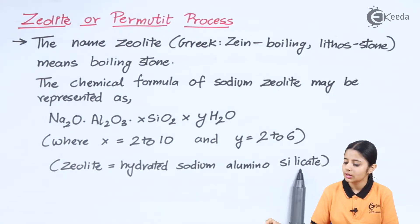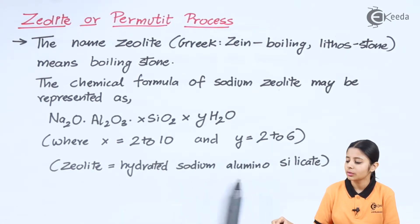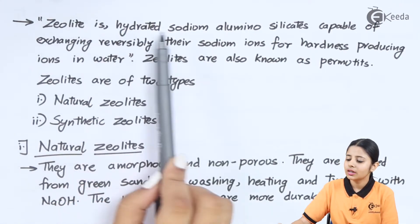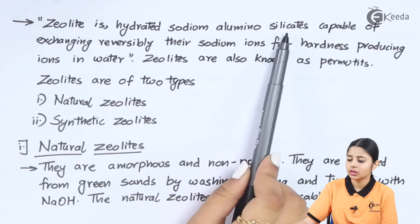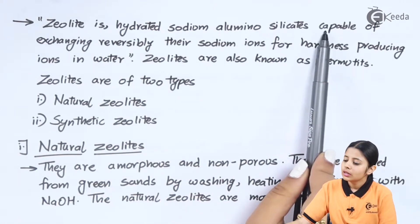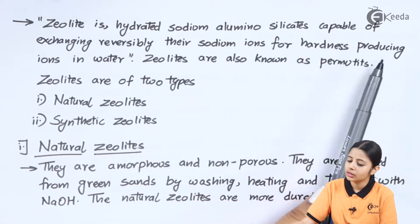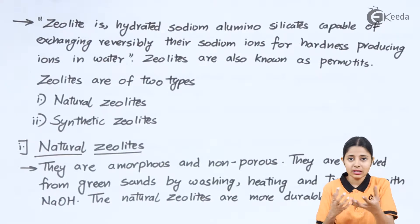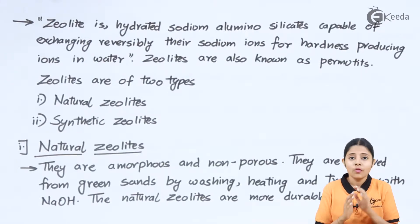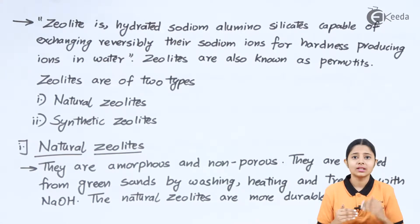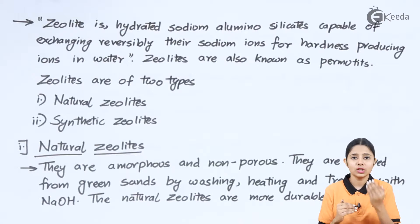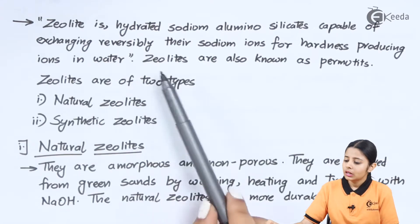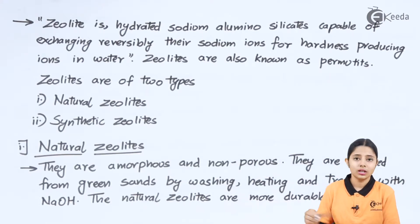Zeolite is hydrated sodium alumino silicate. Its full chemical name is hydrated sodium alumino silicate. It is capable of exchanging reversibly the sodium ions for hardness-producing ions in water. That means the zeolite gives away its Na+ ions and takes away the ions that produce hardness in the water, converting soluble impurities into insoluble ones. Zeolites are also known as permutites — permutite is simply another name for zeolite.